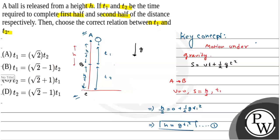So option D, that is t2 equals root 2 minus 1 into t1, is the answer. Hope you understand it.